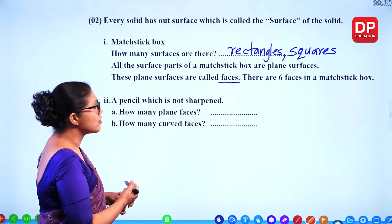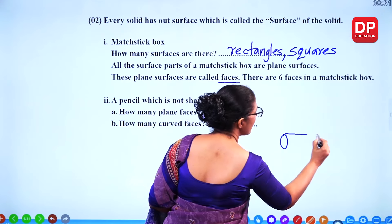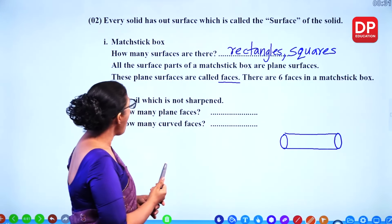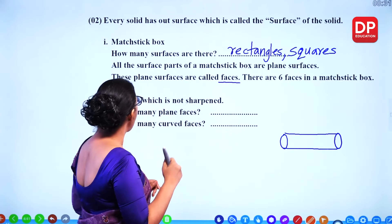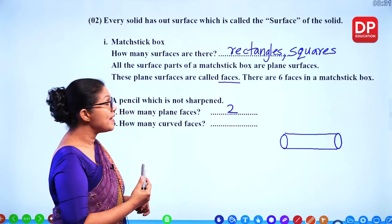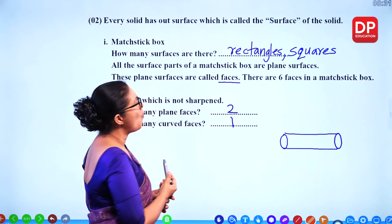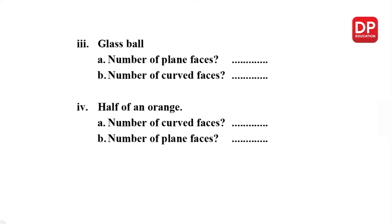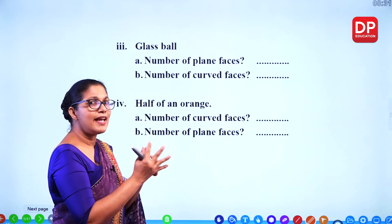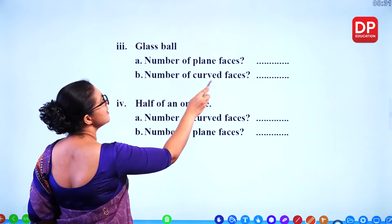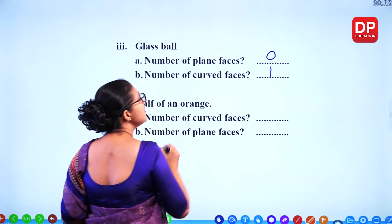Now think about a pencil which is not sharpened. It has two plane faces — one at each end — and one curved surface around it. For a glass ball, there are zero plain faces and one curved face.